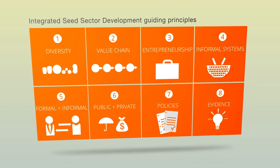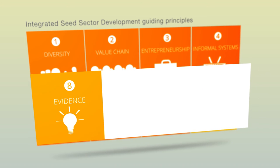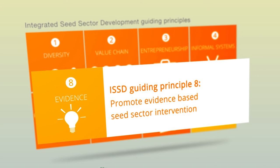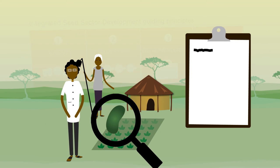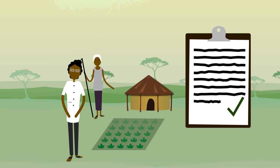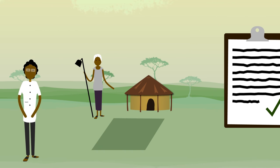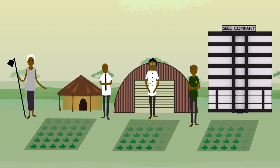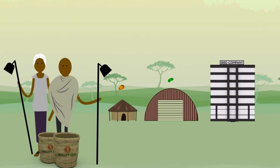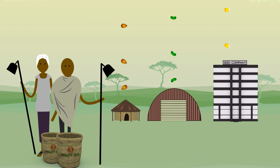ISSD Guiding Principle 8: Promote evidence-based seed sector intervention. In ISSD, stakeholders jointly experiment with new approaches to address seed sector bottlenecks. Studies and action research provide evidence of the causes of problems and potential solutions. This evidence guides the design and planning of seed sector interventions.